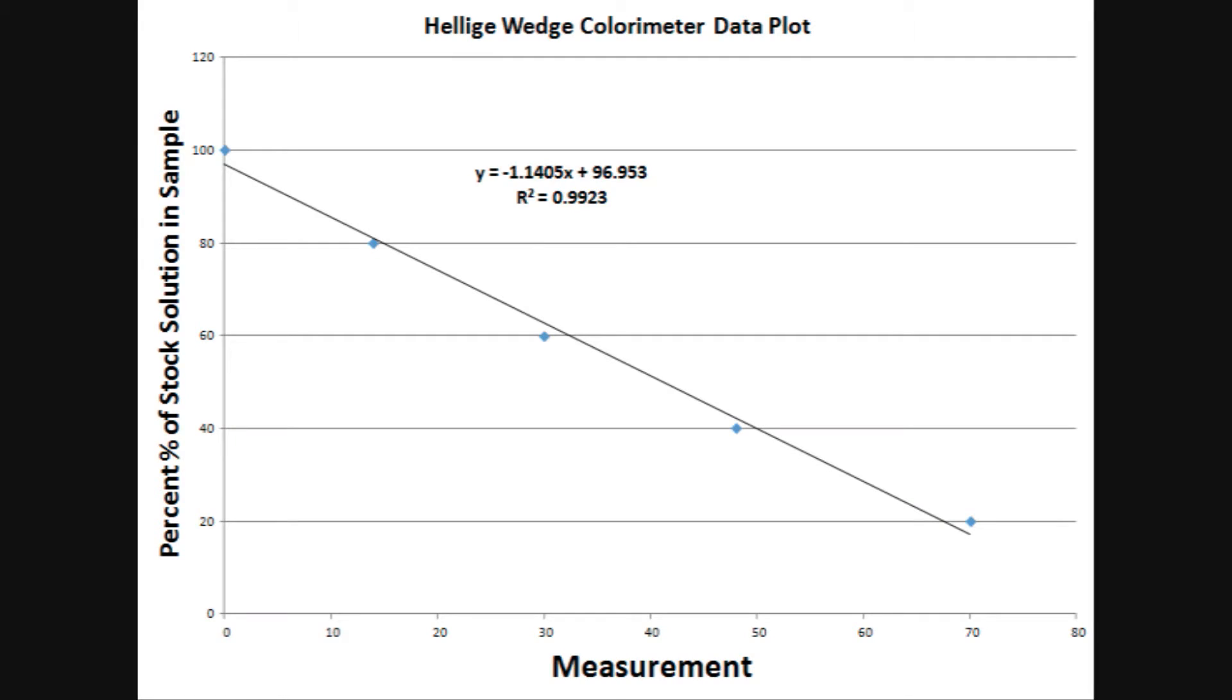So, after recording the data for the various samples and creating a plot, we see that the colorimetric data linearly fits quite well, just as it should, which means that this old school apparatus has still got it. So, this Helige wedge colorimeter was, first of all, circa 1910. Now, by doing math, that makes it more than 100 years old,